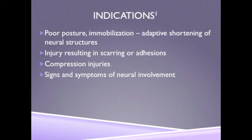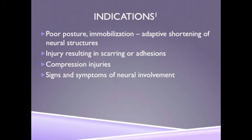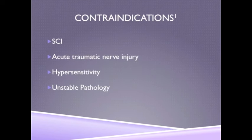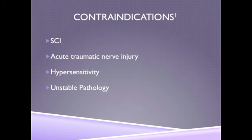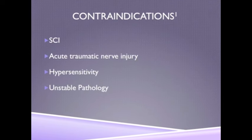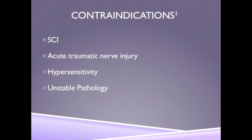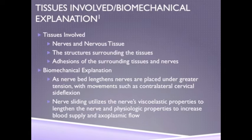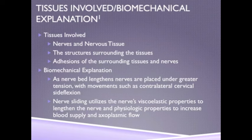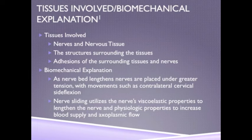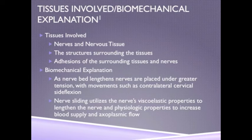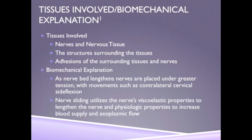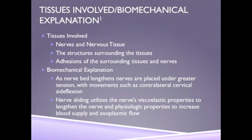Contraindications can include spinal cord injury, an acute traumatic nerve injury, hypersensitivity, or an unstable pathology. Tissues involved in this treatment are the nerves and the structures surrounding them, such as the neural sheath and any possible adhesions.